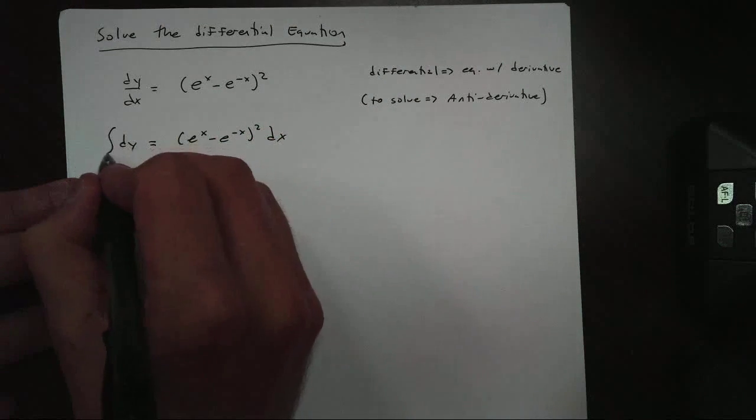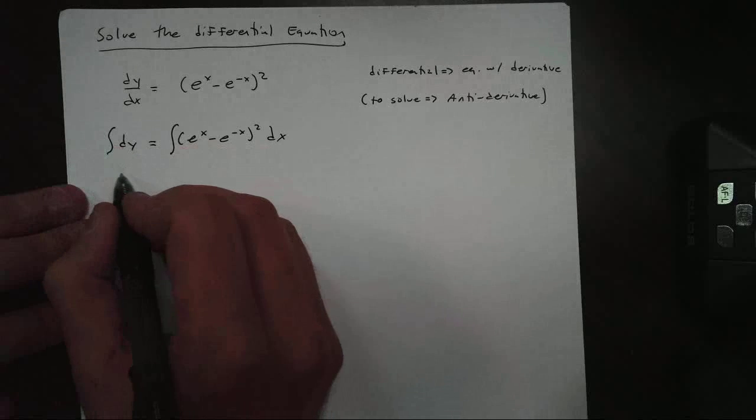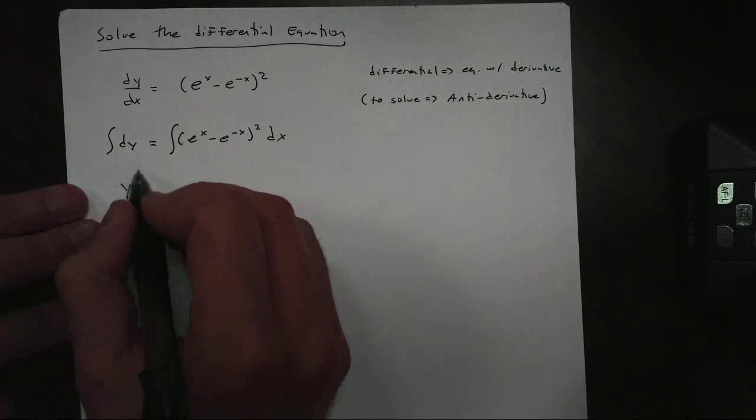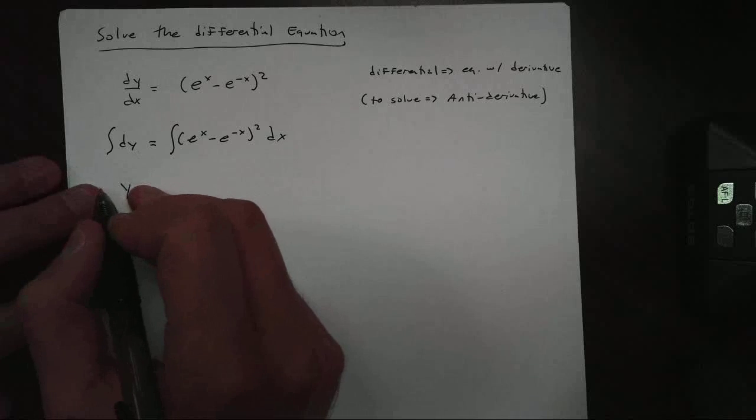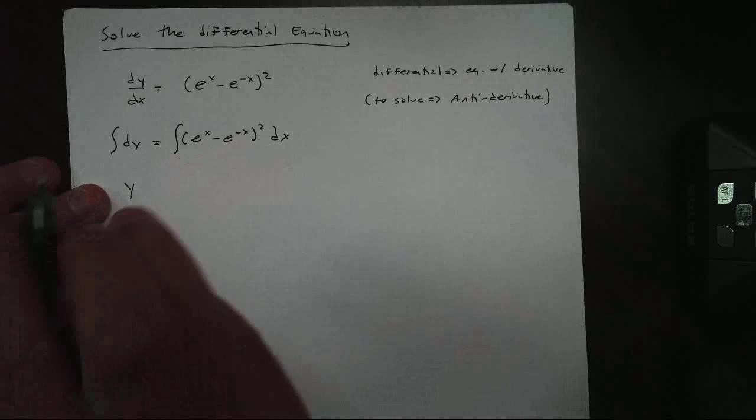And now to solve it, we're going to take the antiderivative of both sides. Now over here, we just get one y. There's really a plus c there, but that constant, we're just going to bring that over to this one as well. So we'll talk more about that in another video.